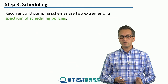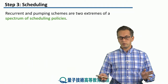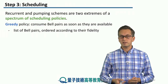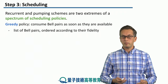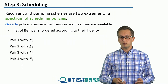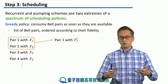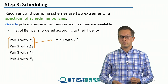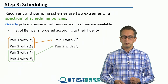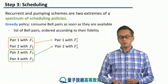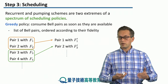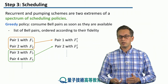Now, these two schemes — the recurrent scheme and the pumping scheme — are two extremes of a spectrum of scheduling policies. You can have greedy policies, where you consume Bell pairs as soon as they are available. You maintain a list of Bell pairs ordered according to their fidelities: pair 1 with fidelity f1, pair 2 with fidelity f2, and so on. You take the pairs of highest fidelities — say f1 and f2 — and purify them to get f1_prime. You take pair 3 and pair 4, purify them to get f2_prime. Or you can start with Bell pairs of lowest fidelities — the bottom-up approach.